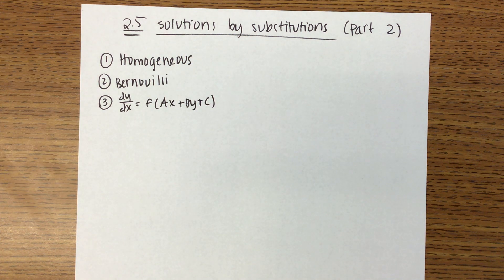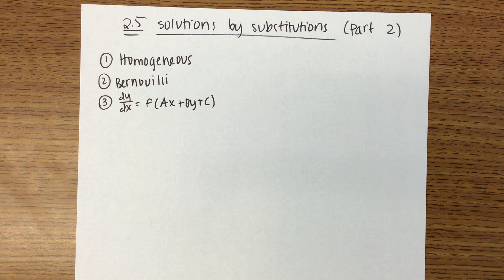Homogeneous and Bernoulli — those are the two big ones. That last one we're going to throw in, but it doesn't come up all that often.